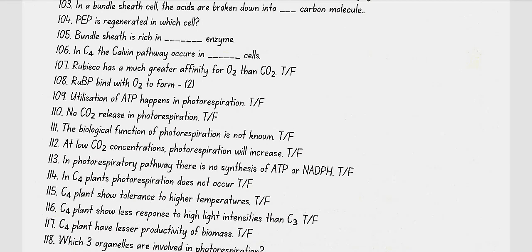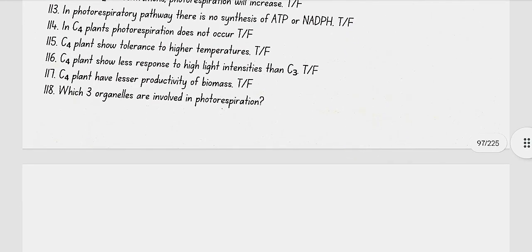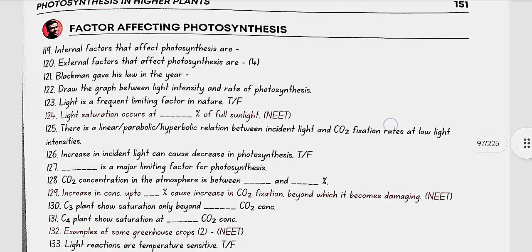In C4 plants, photorespiration does not occur. C4 plants show tolerance to higher temperatures. C4 plants show more response to high light intensities than C3 plants — not less. C4 plants have greater productivity of biomass, not lesser. The three organelles involved in photorespiration are peroxisomes, mitochondria, and chloroplasts.